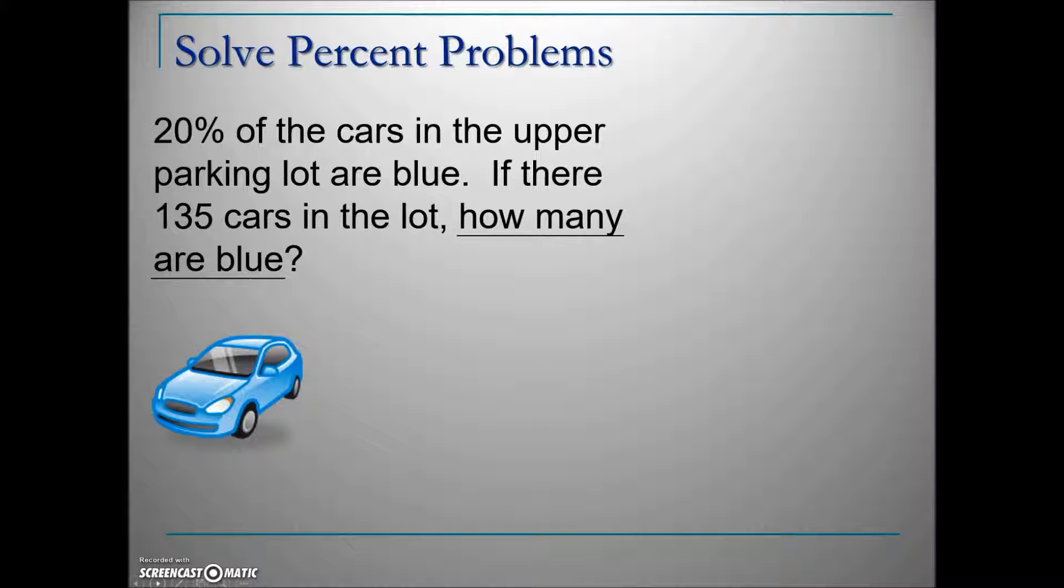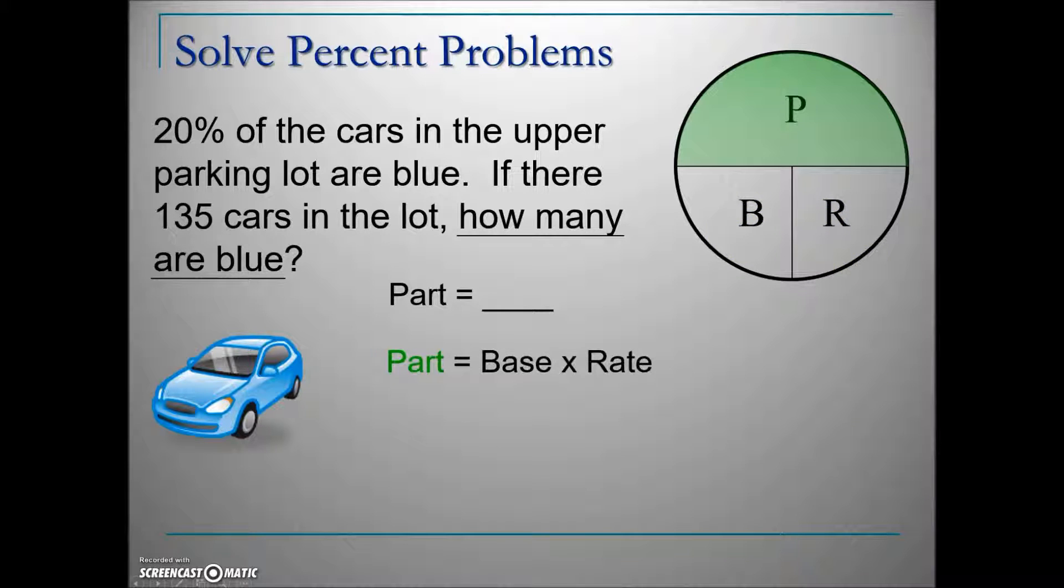Using the circle formula, cover the part—that leaves base next to rate, or base times rate. Replacing values with numbers from the problem: 135 times 20%. Convert 20% to a decimal by moving the decimal two places left, then multiply. The answer is 27 cars are blue.